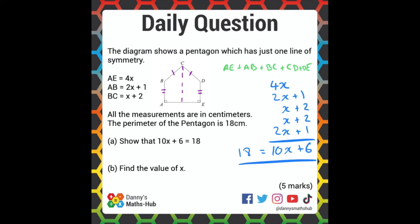We now need to find the value of X, so this is just a simple two-step equation now. 10X plus 6 is equal to 18. And remember, even if you didn't solve the first part, you can still do the second part. We take 6 away from both sides to get 10X is equal to 12. Divide both sides by 10 to get X is equal to 1.2.